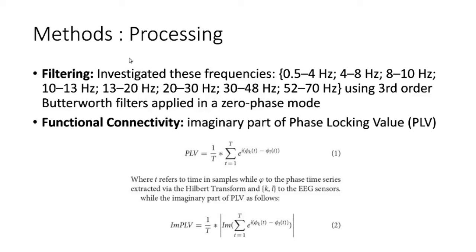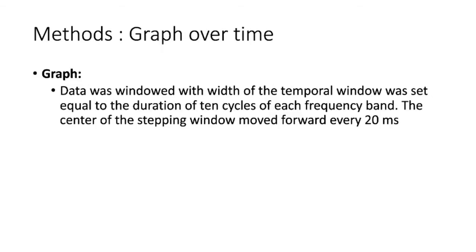Functional connectivity is calculated on each bandpassed dataset using phase locking value (PLV) — you can think of it as how much two electrodes are functionally connected via their phases. There's one extra step: they take only the imaginary part of the PLV to account for volume conduction.